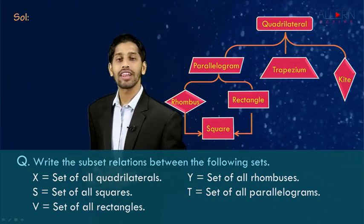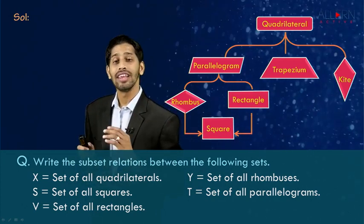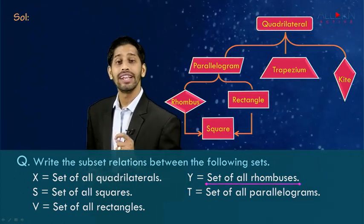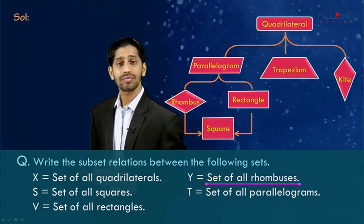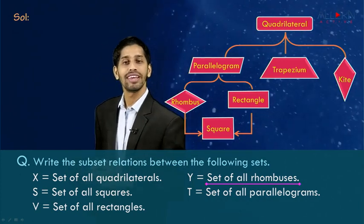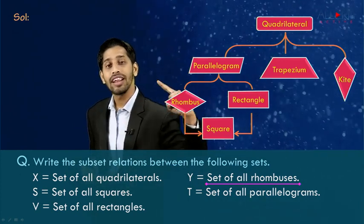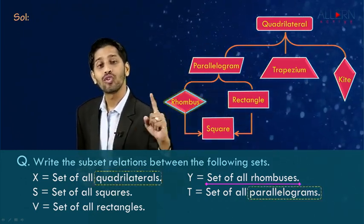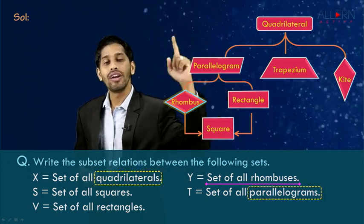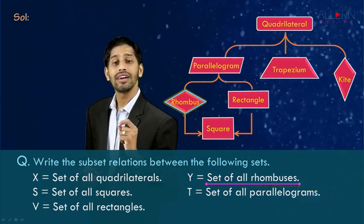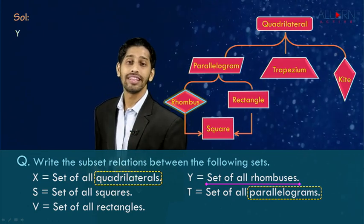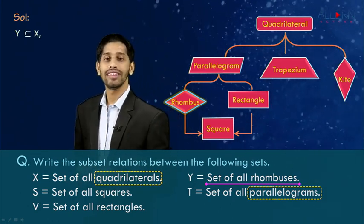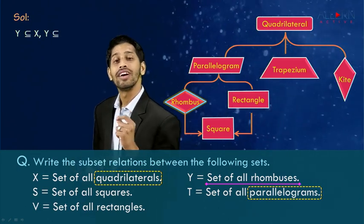With the help of this diagrammatic representation, let's see how exactly we are going to write the subset relation. Starting with set Y, that is the set of all rhombuses. Observing the diagram, rhombus is a part of parallelogram as well as a part of quadrilateral. So we say that Y is a subset of X, and Y is a subset of T.